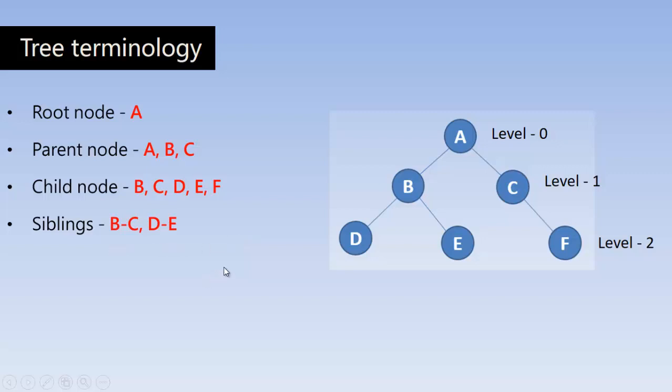Siblings are two or more nodes which have the common parent. This is the general term. When we talk about family, all children belonging to one parent are called as siblings. Here B and C are the siblings because they have the common parent. D and E are also the siblings because they have the common parent B. F, we can't say F as a sibling because it is a single node here.